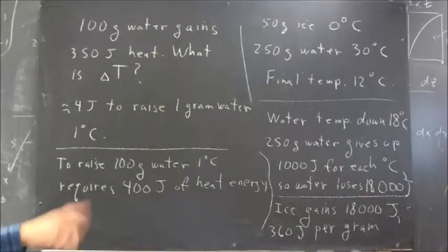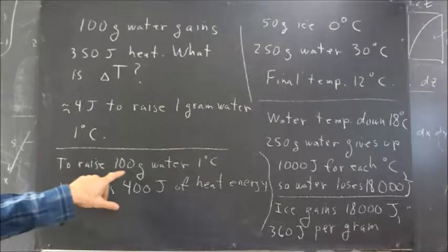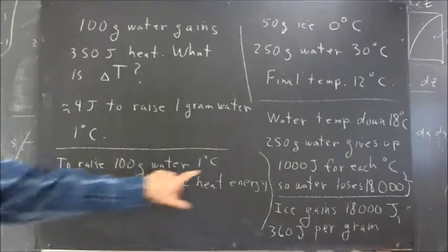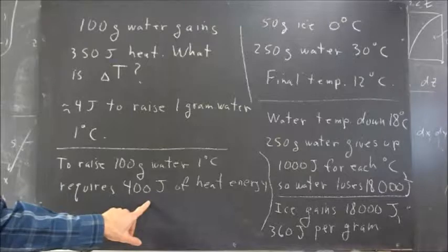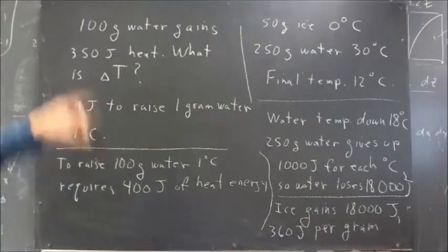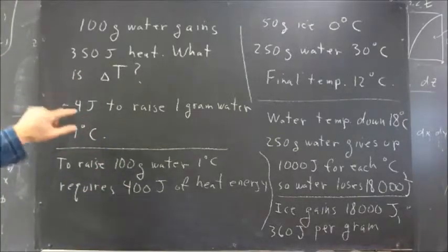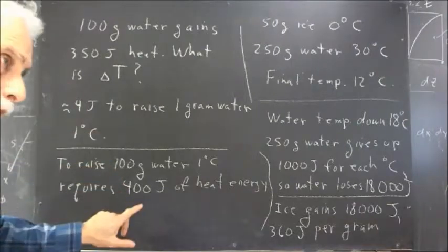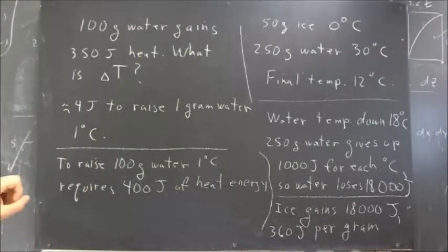And that tells us that, okay, if we want to raise 100 grams of water by a Celsius degree, that requires 400 joules of heat energy. Okay, because if 1 gram requires 4 joules, 100 grams is going to require 400 joules. That shouldn't require any explanation.